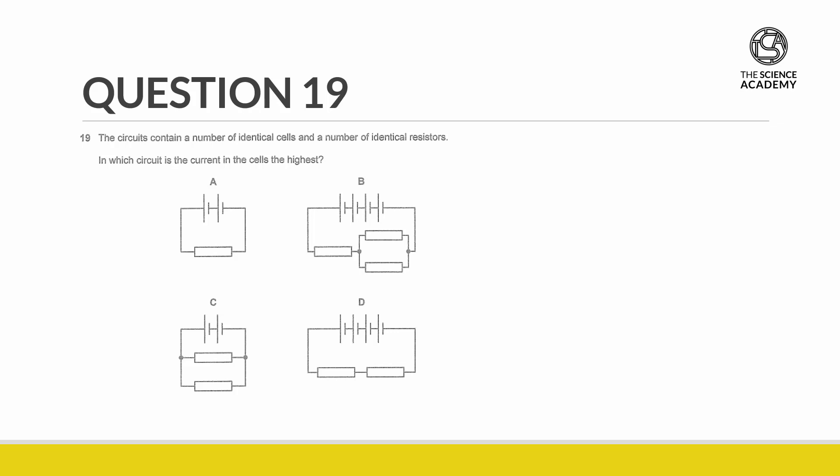Question 19. The circuits contain a number of identical cells and a number of identical resistors. In which circuit is the current of the cells the highest?